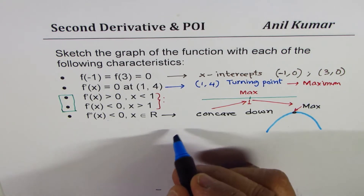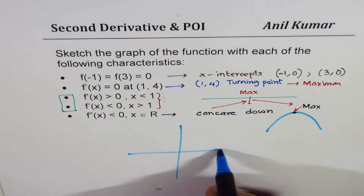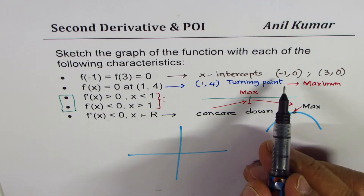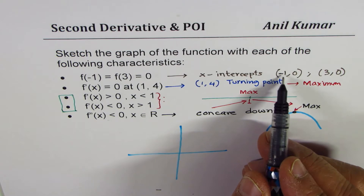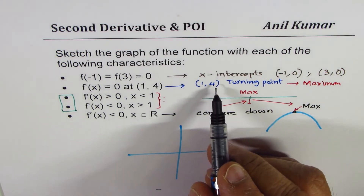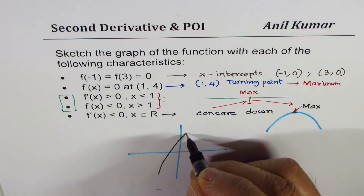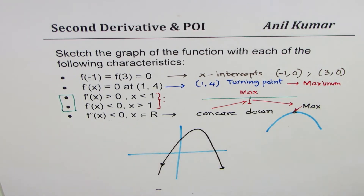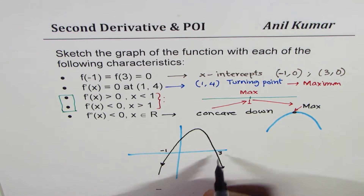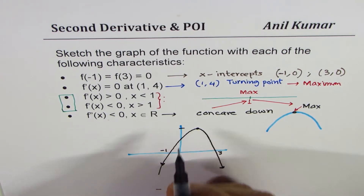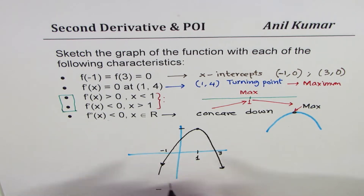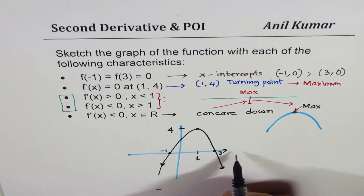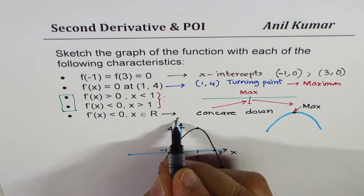Now let me sketch this. We have a graph that is always concave down, with two x-intercepts: one at minus 1 and one at 3, and a maximum at (1, 4). So the x-intercepts are at minus 1 and 3, and the maximum point is at x=1, y=4. That is the graph which works perfectly well for all the given conditions.